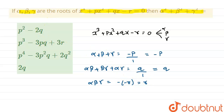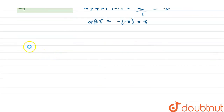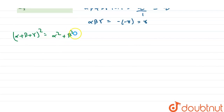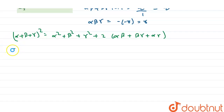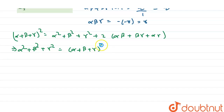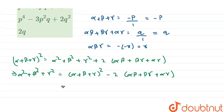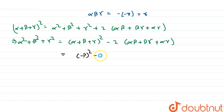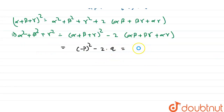In the question we have been asked to find the value of alpha² + beta² + gamma². We will use the identity: (alpha + beta + gamma)² = alpha² + beta² + gamma² + 2(alpha·beta + beta·gamma + alpha·gamma). Rearranging, alpha² + beta² + gamma² = (alpha + beta + gamma)² − 2(alpha·beta + beta·gamma + alpha·gamma) = (−p)² − 2q = p² − 2q.